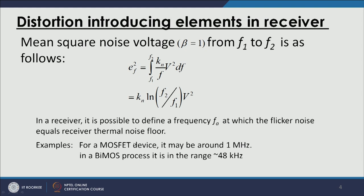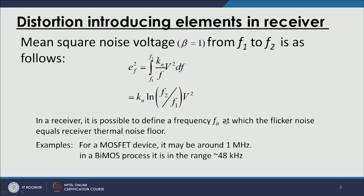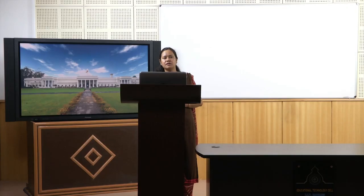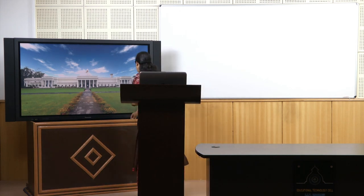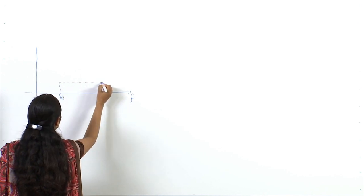In a receiver, flicker noise is characterized by a particular frequency FA, at which the flicker noise equals the receiver thermal noise floor. For MOSFET devices, FA may be around 1 MHz, and in a BiMOS process it is in the range of 48 kHz. Since FA is at very low frequency, signals working near DC or with a flat spectral profile are most impacted by flicker noise.